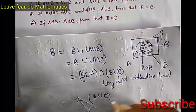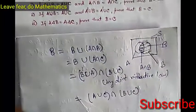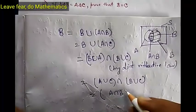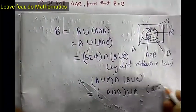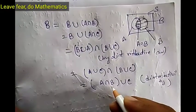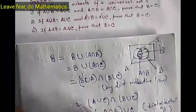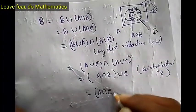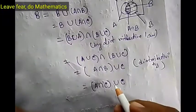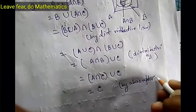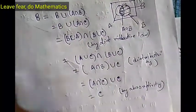We can write (A union C) intersection (B union C). Again by distributive law, we can write this as (A intersection B) union C. Again by distributive law. Now what is given? A intersection B equals A intersection C. So in place of A intersection B, put A intersection C union C. Now A intersection C union C equals C, and this is by absorptivity. So we have started from B and now we have C, therefore B equals C. This is proved.